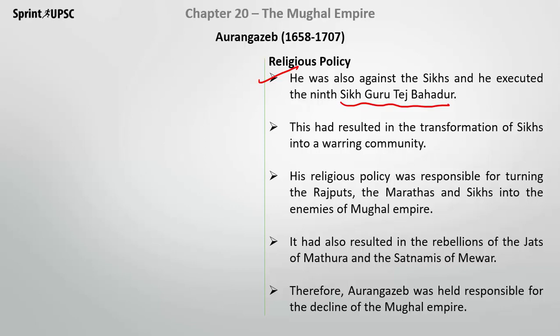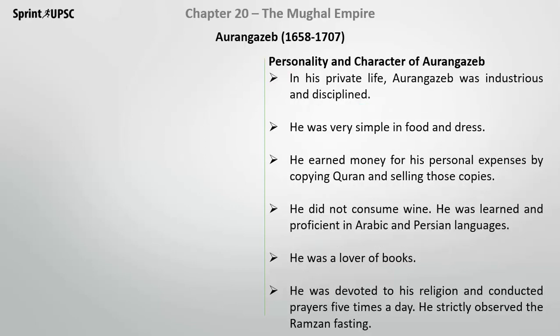The Jats of Mathura, the Satnamis, and the Rajputs of Mewar all became rebels against the Mughal Empire. Therefore, Aurangzeb was held responsible for the decline of the Mughal Empire.